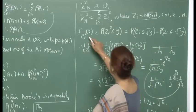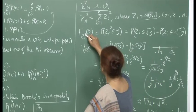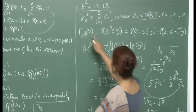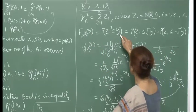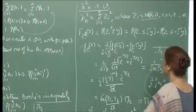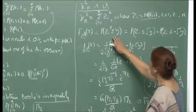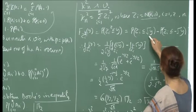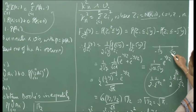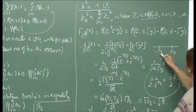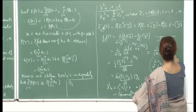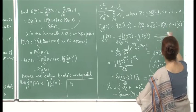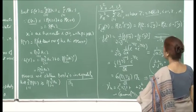We want to compute the CDF of Zi². We have F_{Zi²}(y) = P(Zi² ≤ y). This means Zi must lie between -√y and √y. So this probability is P(Zi < √y) - P(Zi < -√y). Differentiating, the PDF of Zi² is (1/(2√y))[f_{Zi}(√y) + f_{Zi}(-√y)], using the chain rule.